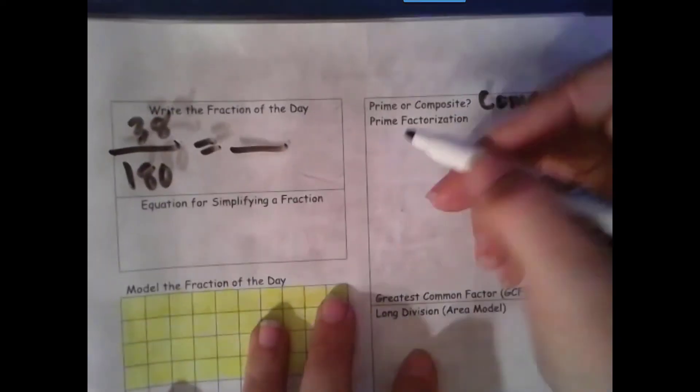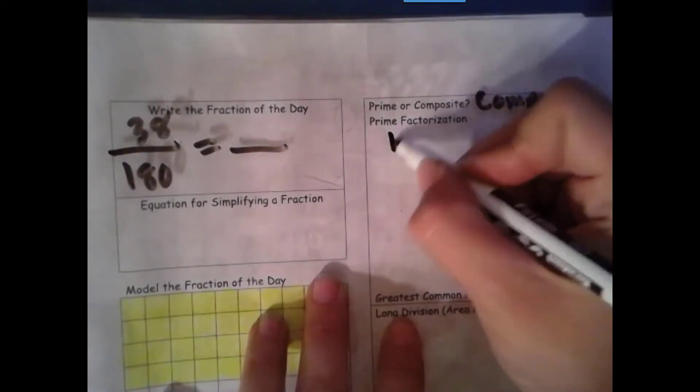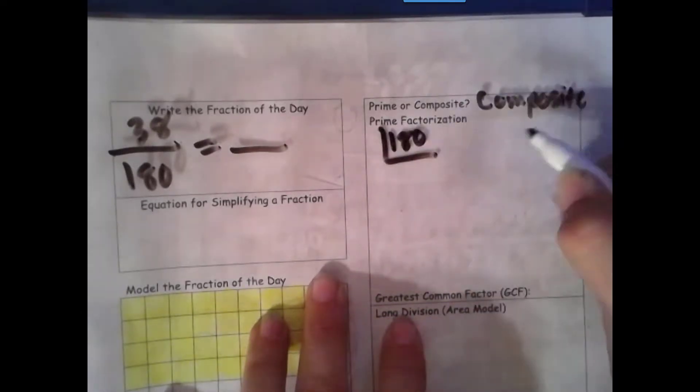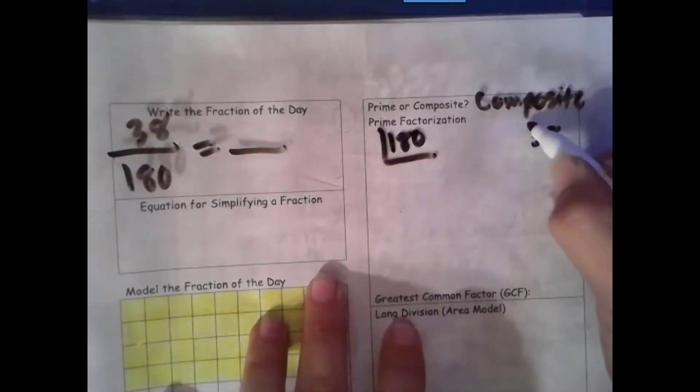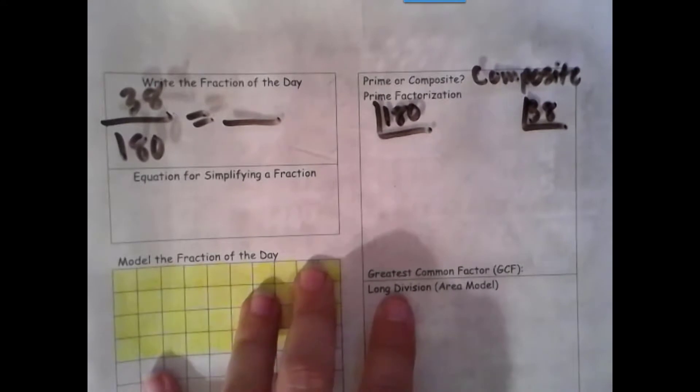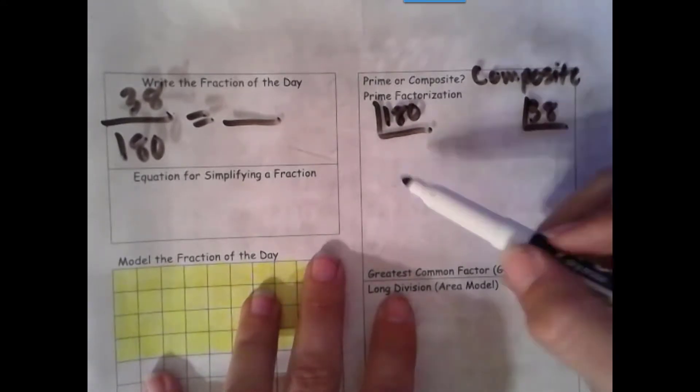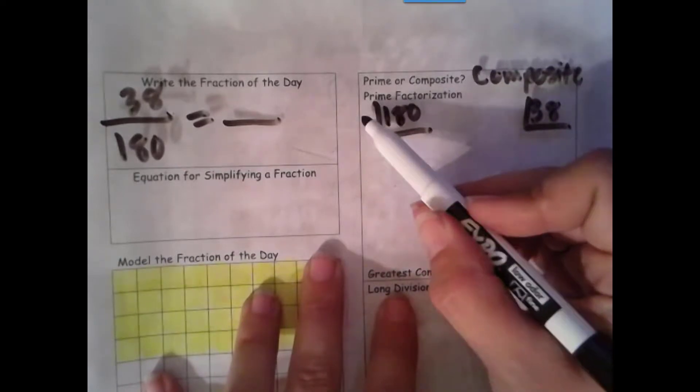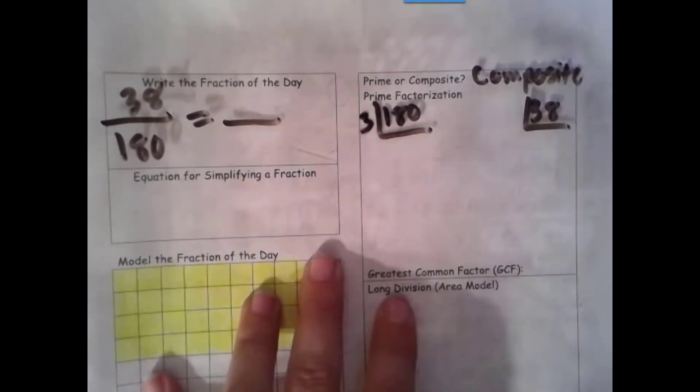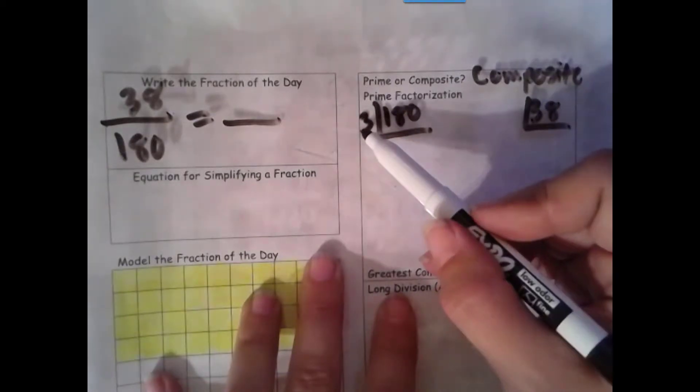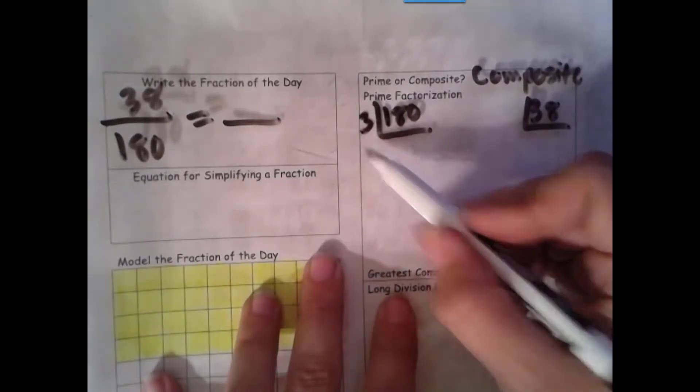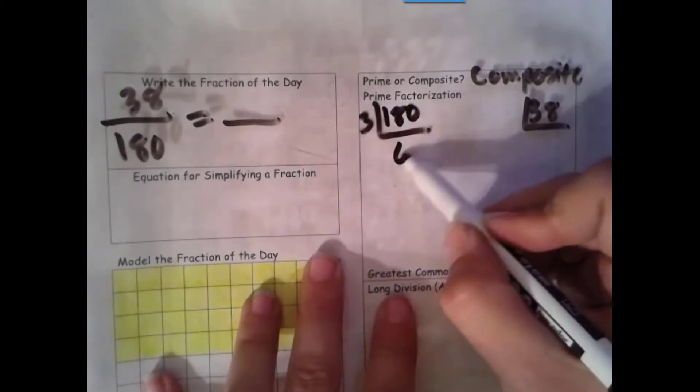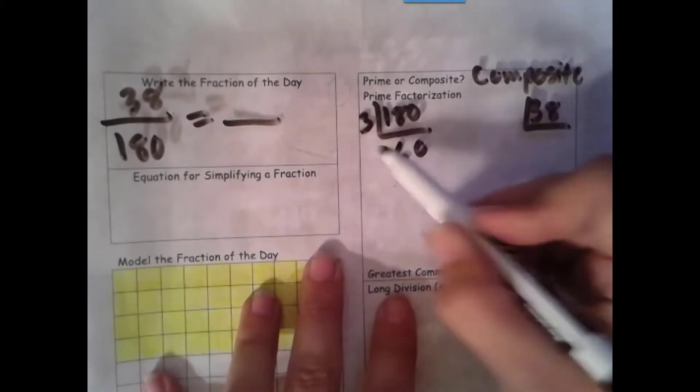But that means we need to do our prime factorization for both our denominator and our numerator. So let's see. I do my upside-down division here. 1 plus 8 plus 0 is 9. 9 is a multiple of 3, so 3 is a factor. Remember, these always have to be prime numbers out here. I can get 6 groups of 3 out of 18, and then I have my placeholder.